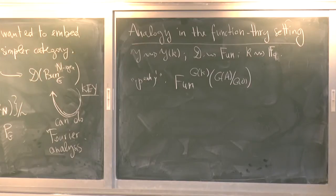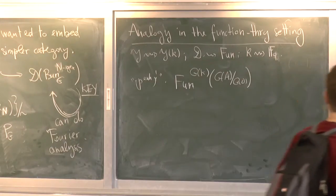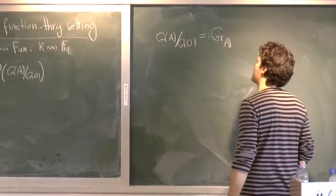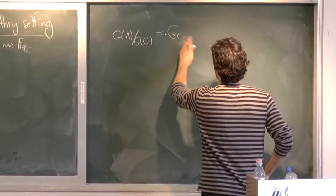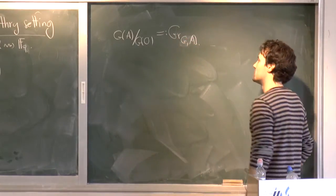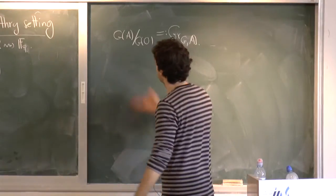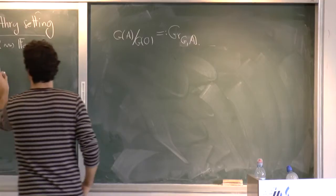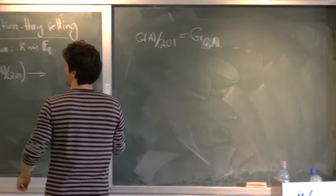And let me just try for simplicity. So G of the adeles modulo G of the integral adeles, I will denote it by Grassmannian A. I should say Grassmannian G of A. Probably forget about the G. Just to say notation, we see that in geometry, that's what's happening.